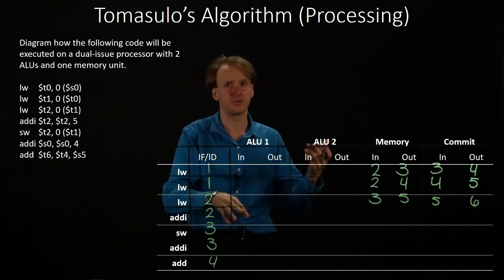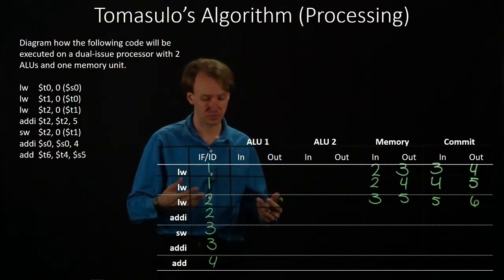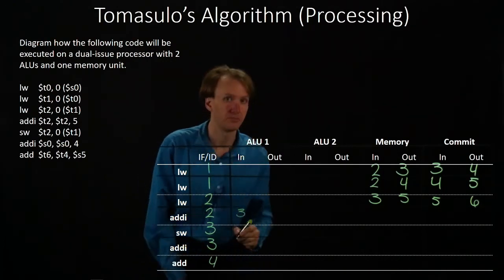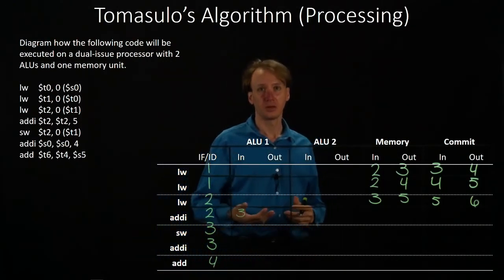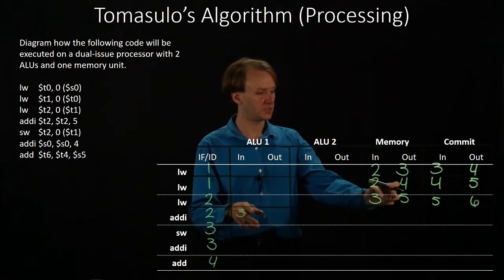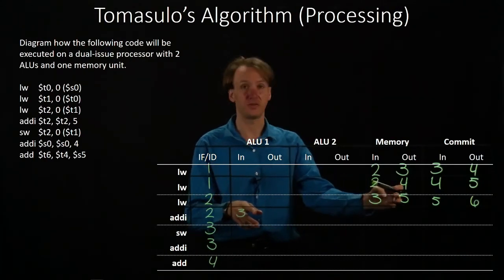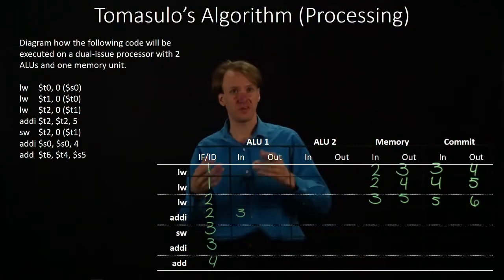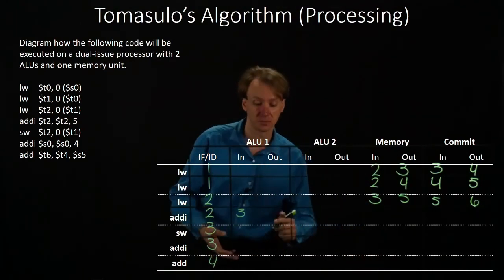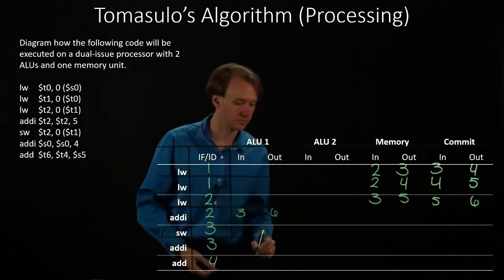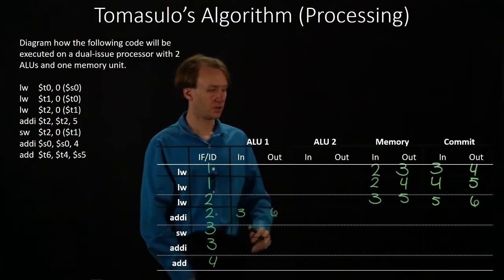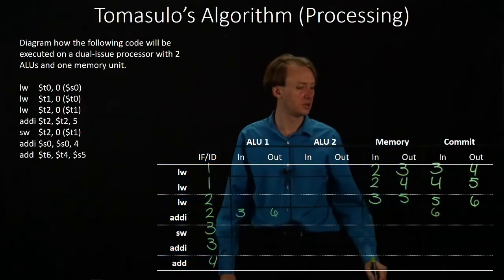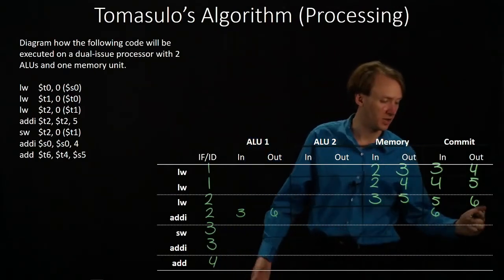I'll send the out-immediate off to the first ALU — that seems reasonable. It would get there in cycle three, but we need to wait until the required piece of data is available. It will be computed in cycle five, so it will be available to use in cycle six. After that, it will go over to the commit unit, and it can be committed in the next available cycle.